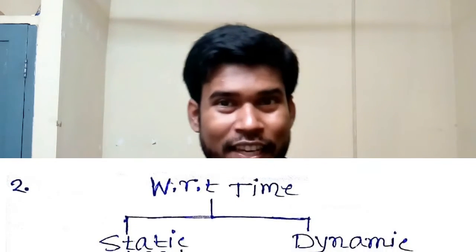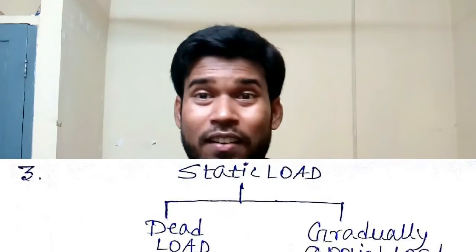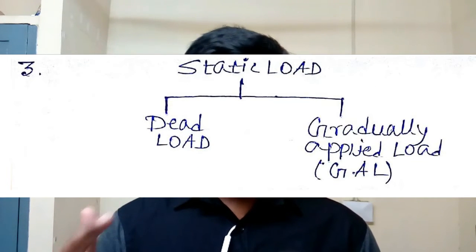Static loading can be differentiated into two criteria: dead loading and gradually applied loading. In dead loading, the magnitude of the load remains constant with respect to time and the direction also remains constant with respect to time. For example, the load of a gear acting on a particular shaft — the load of the gear remains constant with respect to time and acts towards the center of the earth. This kind of load is called dead load.